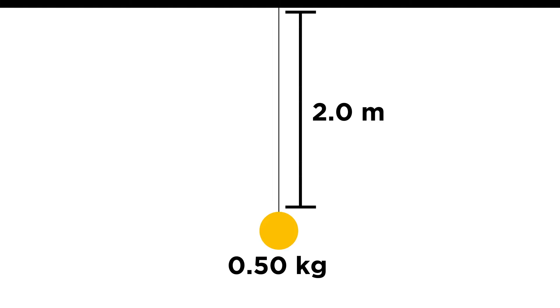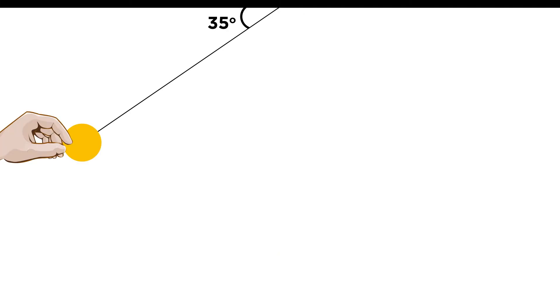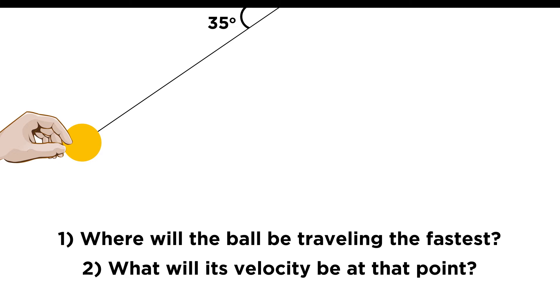You then try to make various predictions about the system. If you release the pendulum from an angle of 35 degrees below the horizontal, where will the ball be traveling the fastest, and what will its velocity be at that point?